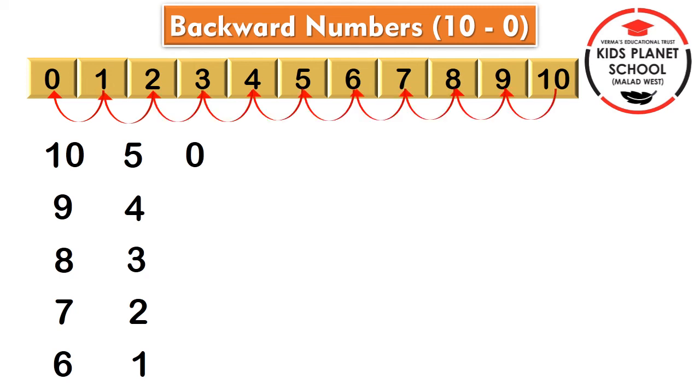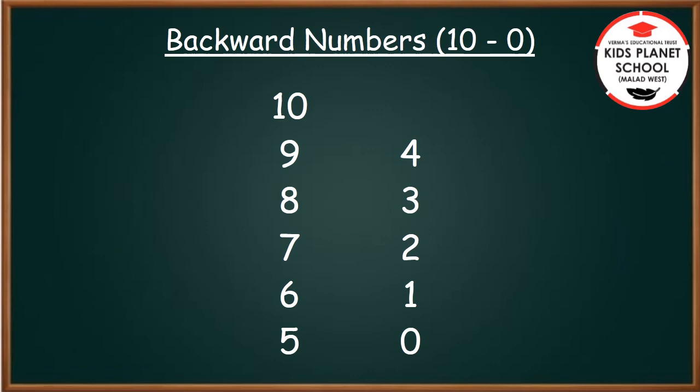Children, this is how we write backward numbers. Now, let us revise the backward numbers once again: 10, 9, 8, 7, 6, 5, 4, 3, 2, 1, 0.